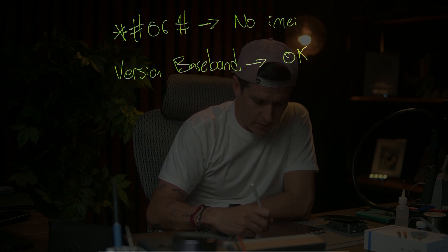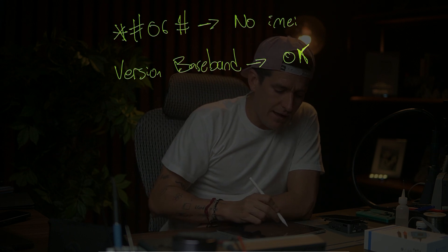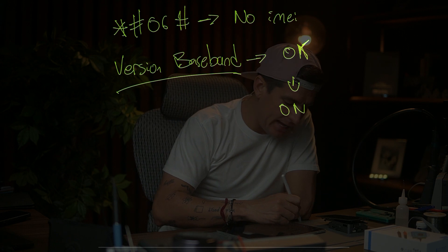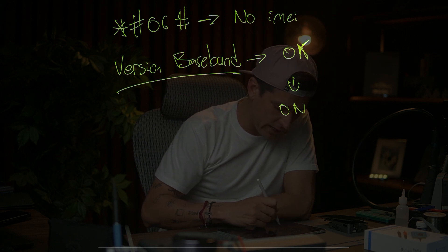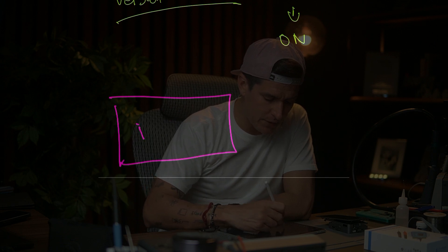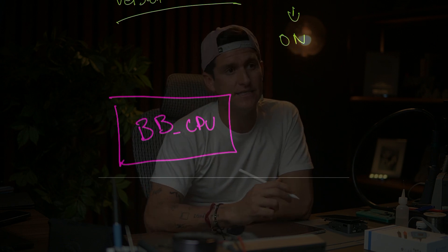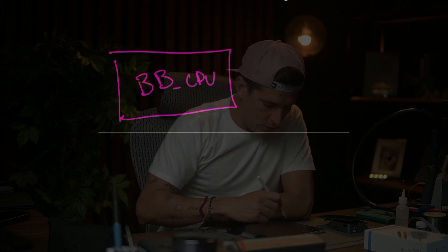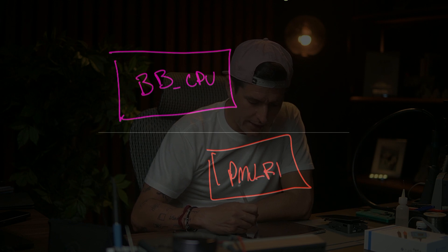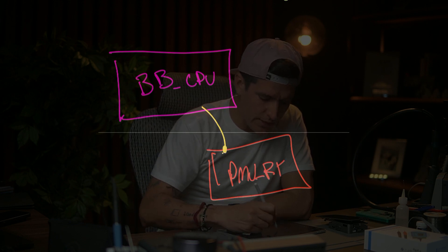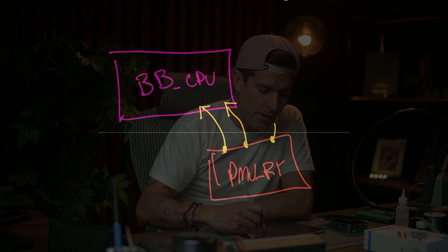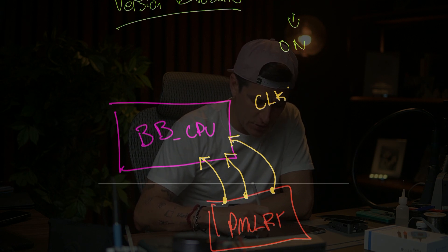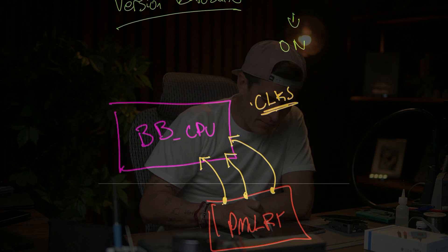These are two different failures. When you have a baseband version, it means your baseband is on. To have the baseband on, you need the baseband CPU — the IC for radio frequency — and then you need the PMU RF, which is responsible for sending power lines to the baseband CPU. You also need some clocks to keep the baseband on.